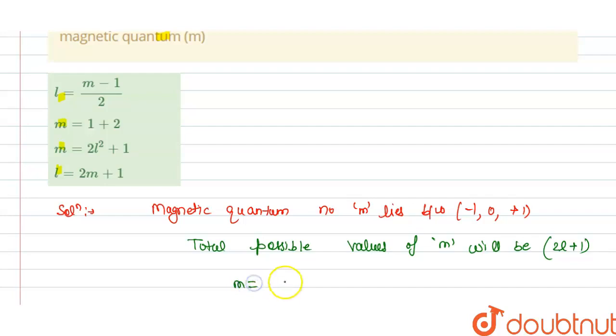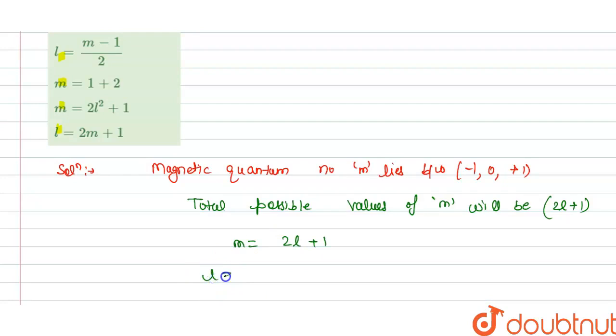So from this we get M equals 2L plus 1, and we have L equals M minus 1 divided by 2.